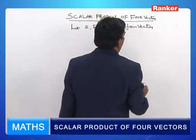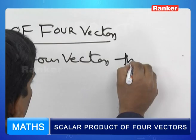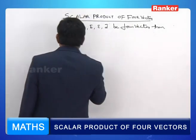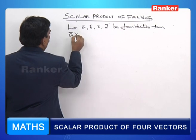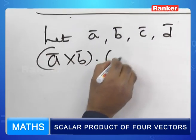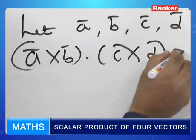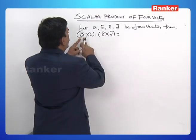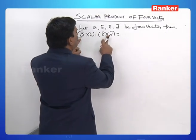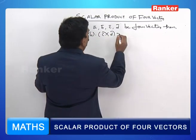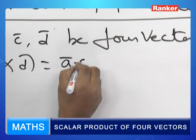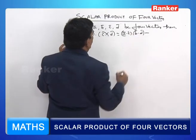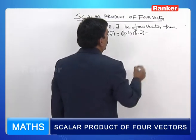Then we have to show that A bar cross B bar, dot of C bar cross D bar, can be written as [A·C, A·D; B·C, B·D] — that is, 1-3, 2-4 minus 1-4, 2-3.